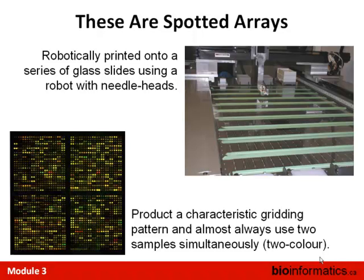You can almost always recognize a two-color microarray produced this way by the characteristic gridding pattern with spaces between the squares — each corresponds to a single run from the needle head. Over the course of a print run, the needles can wear down, and you can see a bias either across one print grid or within the spatial array. To do good bioinformatics, you have to understand the technology and know the sources of error — there are techniques for print grid normalization to reduce the effect of sequential needle degradation.